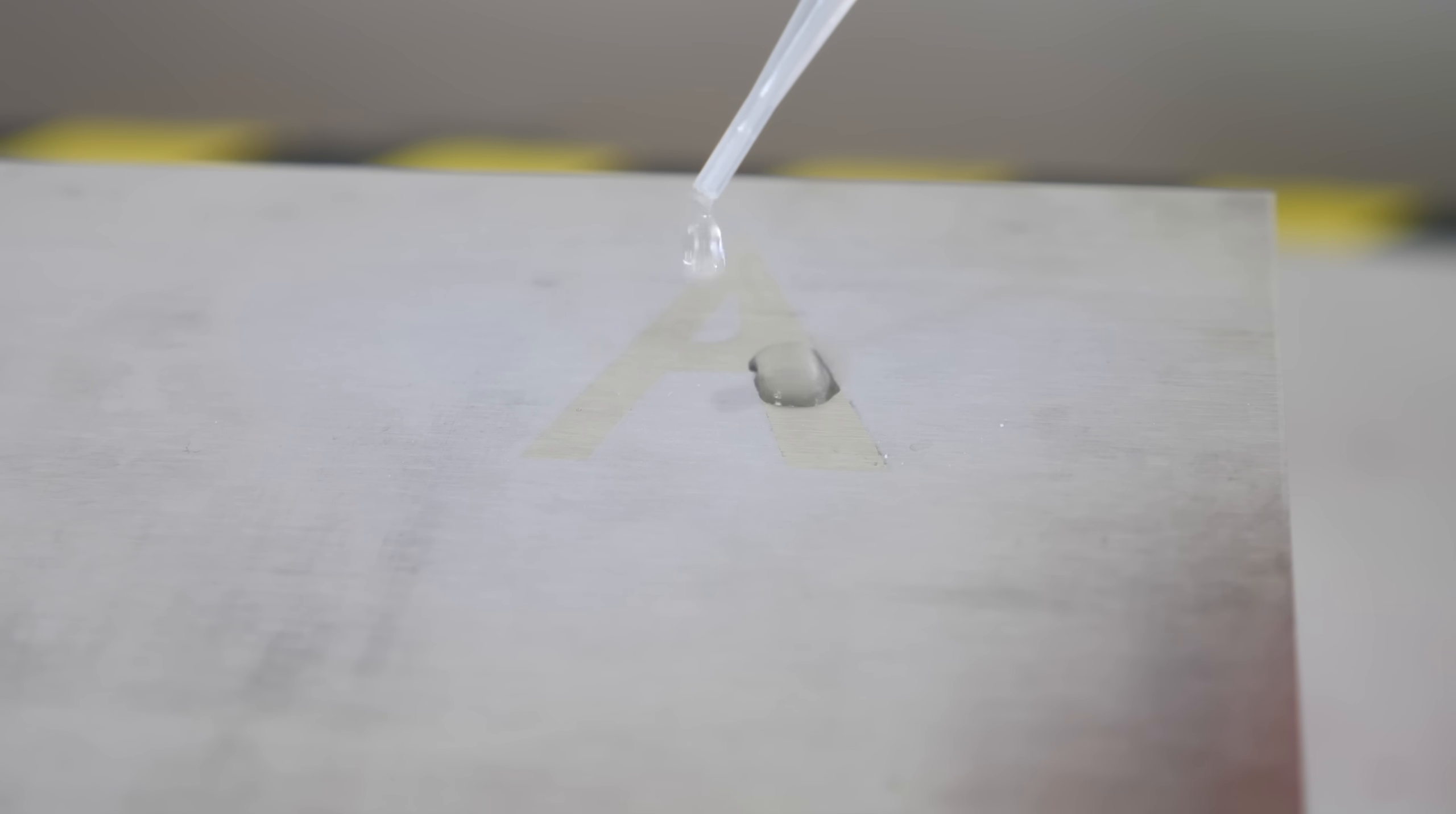You can actually do this in any shape you want. For example, here's an A for the Action Lab. Look how cool that looks. Just put it on one droplet at a time and it forms this perfect A.